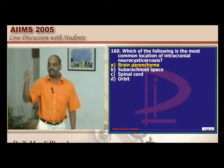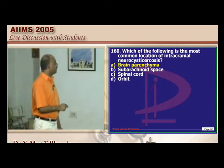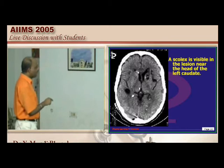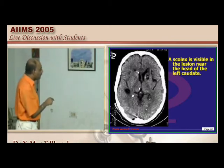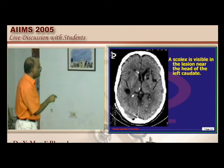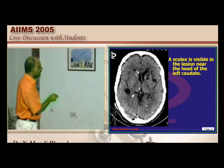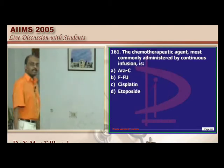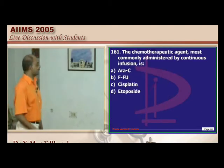Intracranial neurocysticercosis can occur within ventricles but is more common in the brain parenchyma. You can see the caudate nucleus and internal capsule. A cyst with a scolex can be clearly appreciated at the level of the caudate. Comparing the two caudates reveals multiple calcifications in neurocysticercosis.